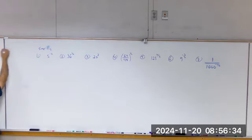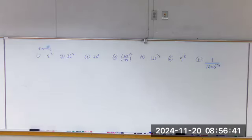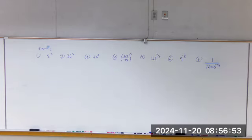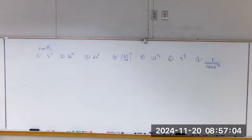Number two: when you have a power to a power, you multiply the exponents. A to the m raised to the nth power — you multiply the exponents, giving a to the m times n. Number three: if you have a product to a power, so a times b — a product to the power of m — then each factor is raised to that power: a to the m, b to the m.